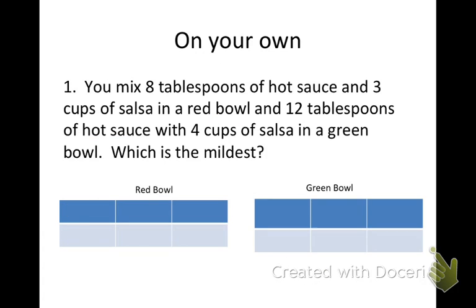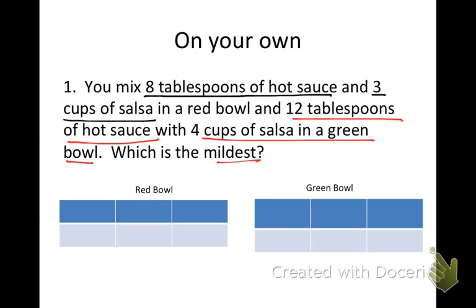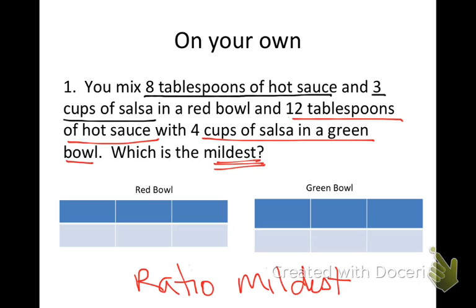Now you're going to try one on your own. Copy this entire example into your notebook — pause the video and play again when you're ready. You have two charts set up: eight tablespoons of hot sauce in three cups of salsa, and twelve tablespoons of hot sauce in four cups of salsa. Find out which is the mildest — not the strongest. If you can't remember what to do, go back and follow the same procedure. When finished, write in the text box which one is the mildest and what the ratio is.